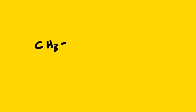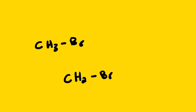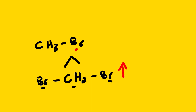Now let us look at bromomethane and dibromomethane. Which one has the higher boiling point? If we have the same alkyl group and the same halide, an increasing boiling point will depend on the number of halides attached to that alkyl group. Since dibromomethane has two halides attached to the methyl group, it will have a higher boiling point compared to bromomethane.